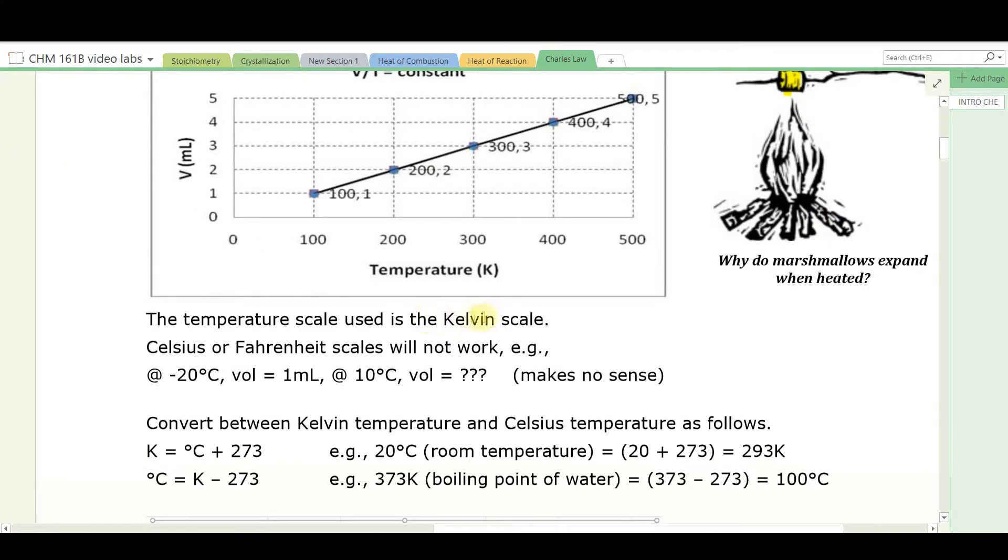Now, we have to use the Kelvin scale. It's an absolute scale. Celsius or Fahrenheit will not work. Think about this. Let's say the temperature was minus 20 degrees Celsius, and the volume was one milliliter. And we warm the temperature up from minus 20 up to plus 10. What's the volume? Well, by what factor has the temperature increased? We can't figure out a factor because we're going from a negative to a positive value. That's increasing, but the magnitude is actually decreased. You see, these calculations make no sense unless you use an absolute scale, such as the Kelvin scale.